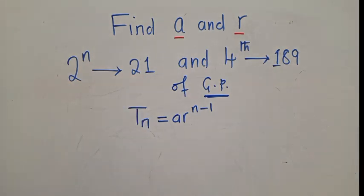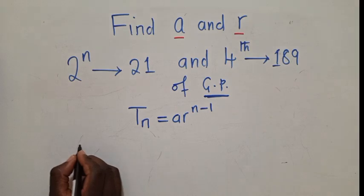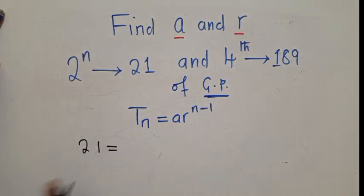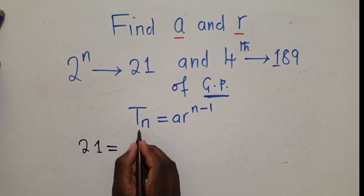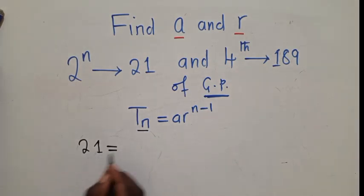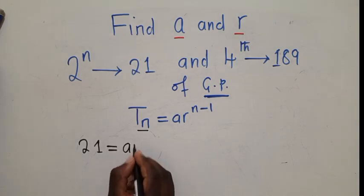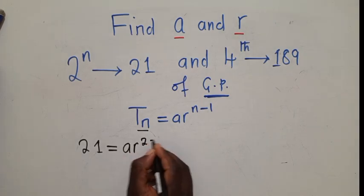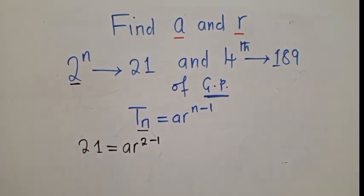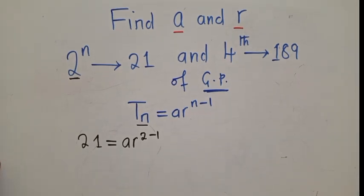We know that at position 2, there is this number, 21. Meaning, we are going to write 21 is equal to ar to the power 2 minus 1. Where there is n, write 2. So that's the first step. We just simplify this.